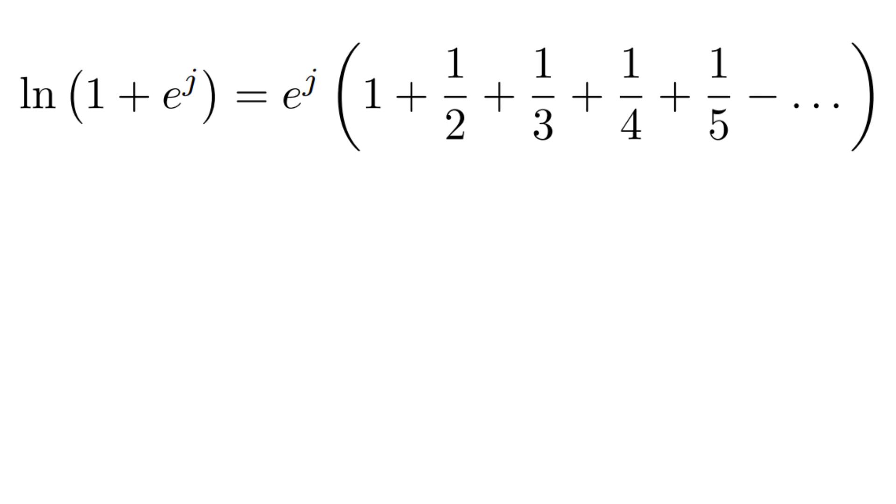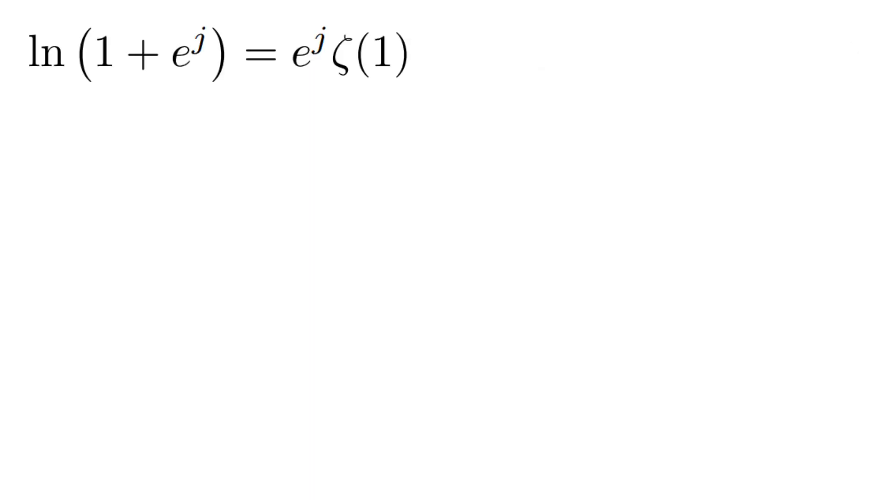This series of fractions is actually a well-known mathematical sum called the Riemann zeta function at 1, commonly written as zeta of 1. So we can rewrite the expression for the logarithm of 1 plus e raised to the power of j as e raised to the power of j times zeta of 1. Now let's move on to the next interesting step, finding the natural log of 0. Based on what we have derived, we can infer that the natural logarithm of 0 equals negative zeta of 1.